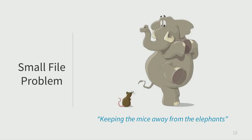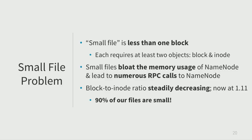We define a small file as anything less than one block in size — by default 128 megabytes. Each file requires at minimum two objects stored in memory on the namenode: an inode representing its place in the file hierarchy, and a block representing the data. A 128 MB file and a 10 KB file both require the same namenode memory — one inode and one block — so small files can bloat namenode memory usage. There's a lot of metadata associated with a small amount of data.